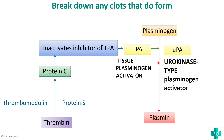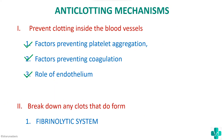Tissue plasminogen activator converts plasminogen to plasmin. There is also another activator — urokinase-type plasminogen activator (uPA) — that can also convert plasminogen to plasmin. It is plasmin that converts fibrin to fibrin degradation products (FDP). So in the fibrinolytic system: thrombin with thrombomodulin and protein S activates protein C, which inactivates the inhibitor of TPA, TPA activates plasmin from plasminogen.